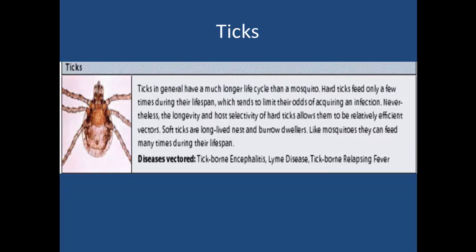And then lastly, ticks — they are a type of arachnid and they have a longer life cycle than a mosquito. They will typically bite you and can cause specific diseases called tick-borne encephalitis, Lyme disease, and tick-borne relapsing fever. These diseases can actually be quite complicated to treat and very difficult to prevent, but we'll talk about some of those as well.